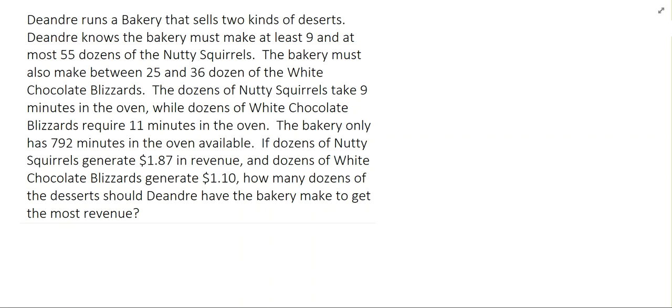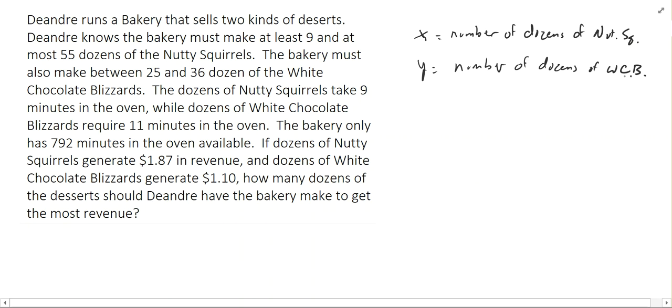All right, so we're going to start with identifying our unknowns. The two things that we don't know are the number of dozens of nutty squirrels to make. So let's let X be the number of dozens of nutty squirrels, and we'll say Y is the number of dozens of the white chocolate blizzards.